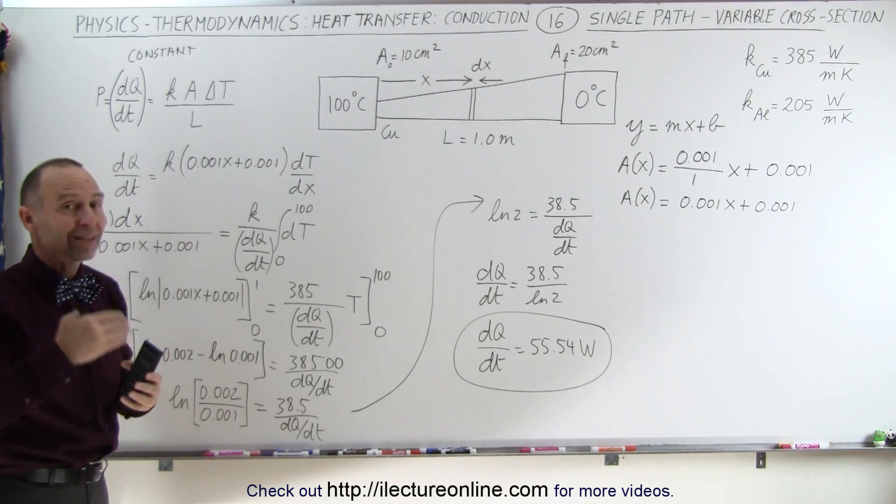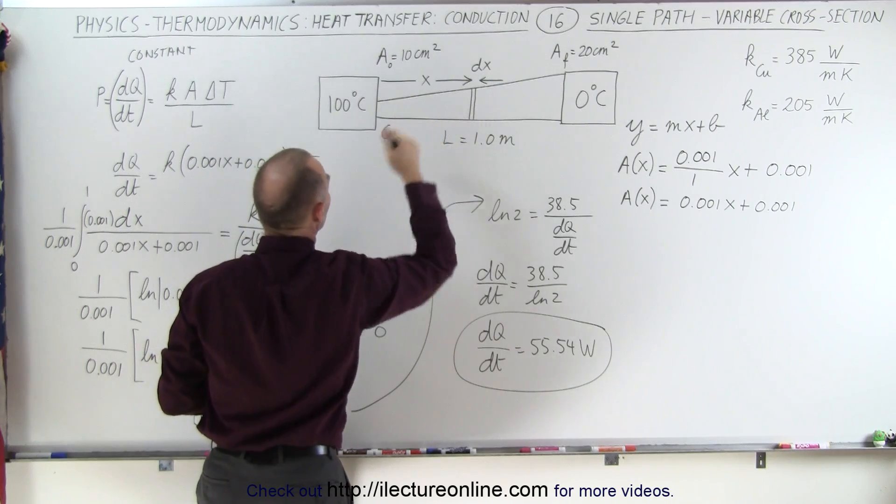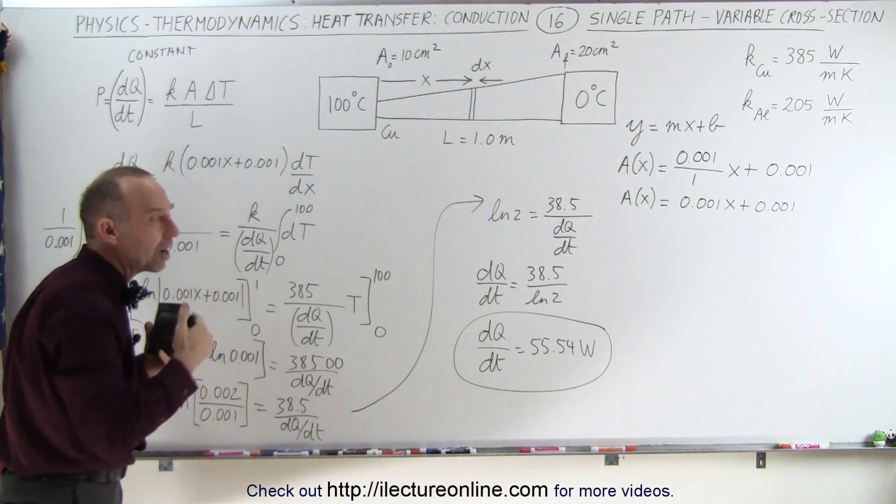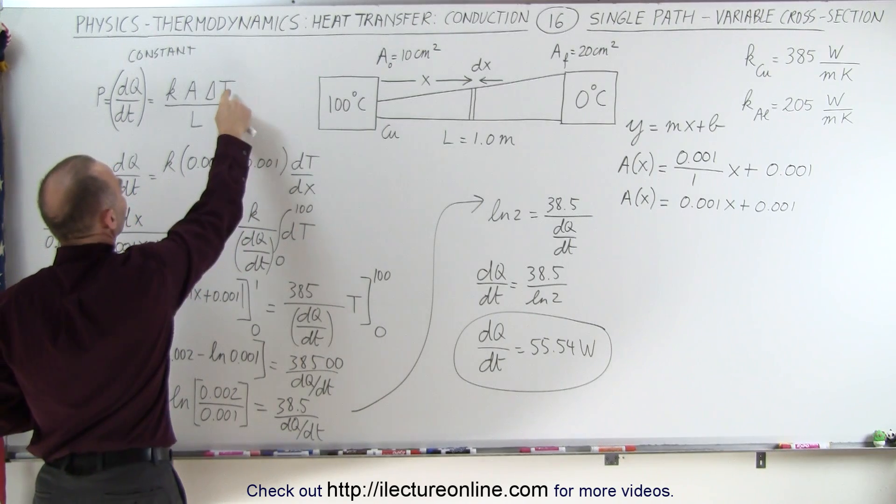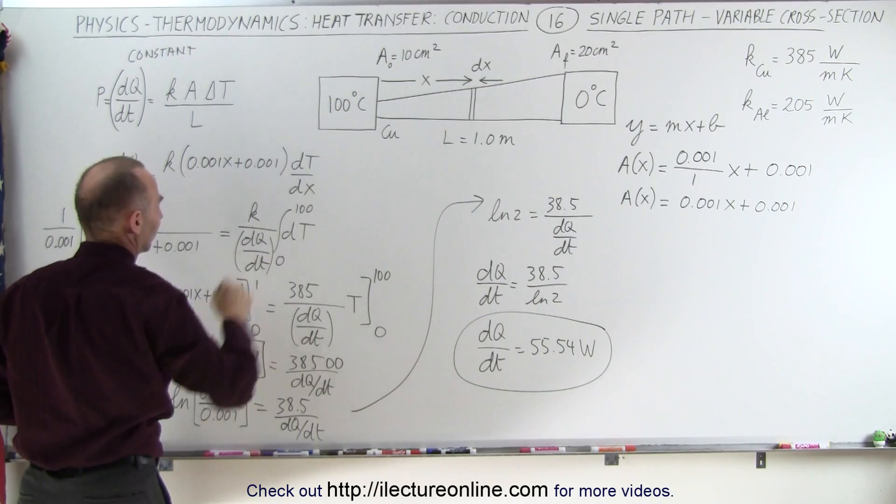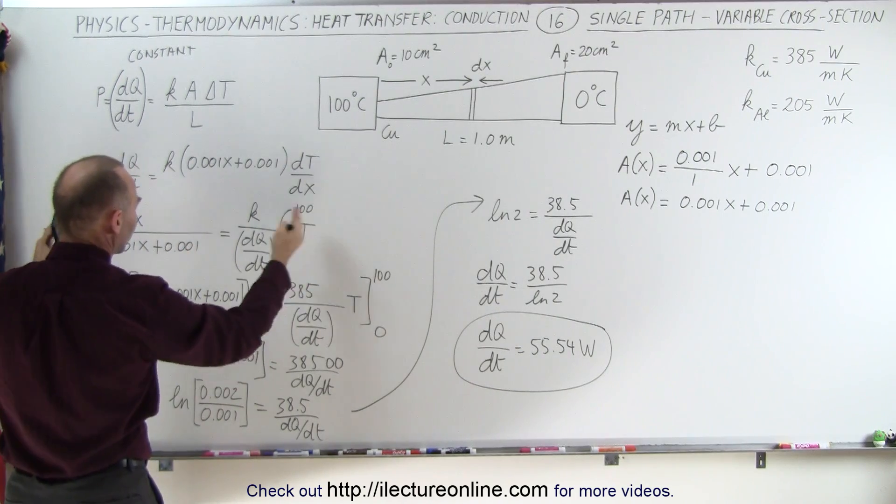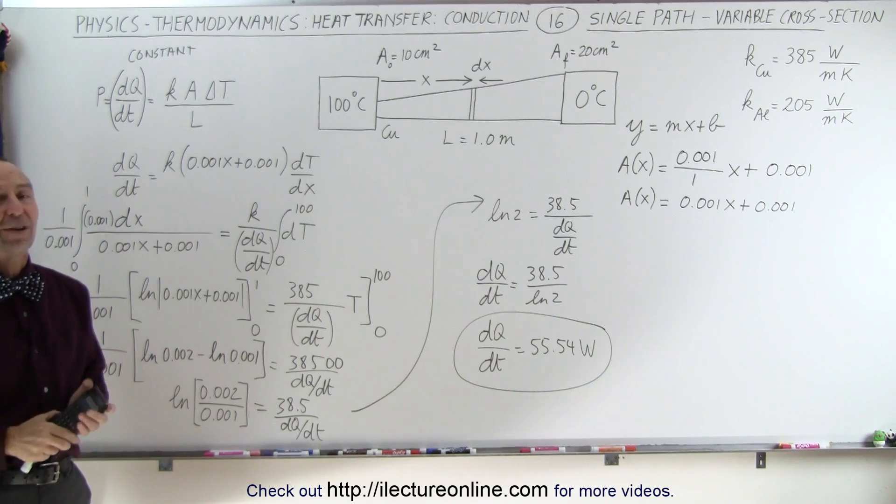Then we have to realize that the temperature change from section to section is not going to be constant. It's not going to be a constant temperature gradient, as we call it. So therefore, instead of writing delta T divided by L, we have to write dT/dx. And then we have to separate the variables and integrate both sides to get that result. And that's how it's done.